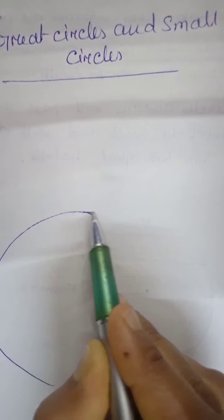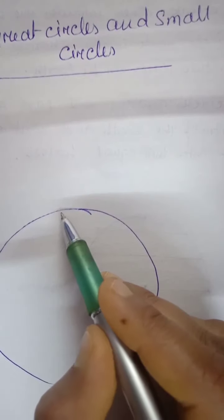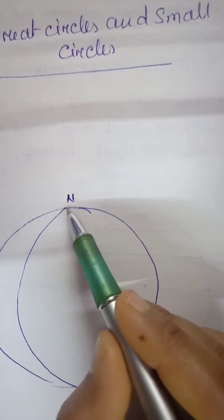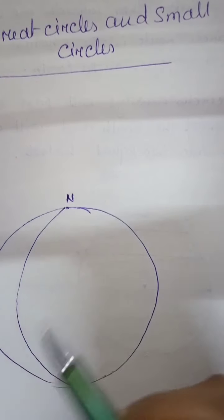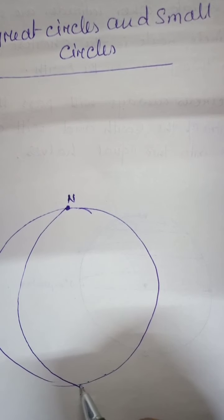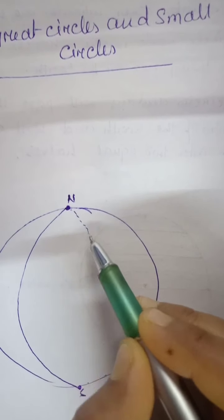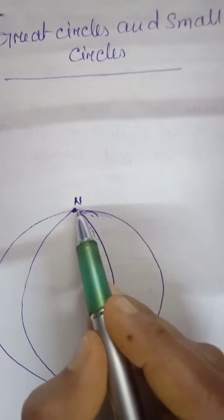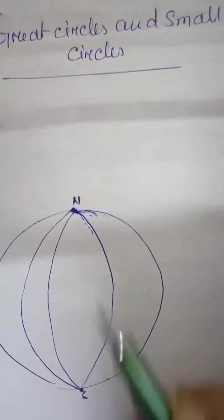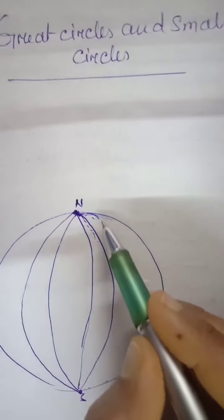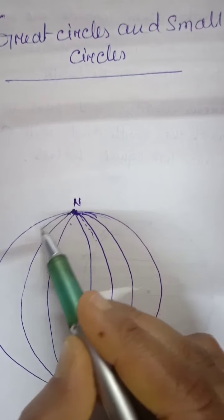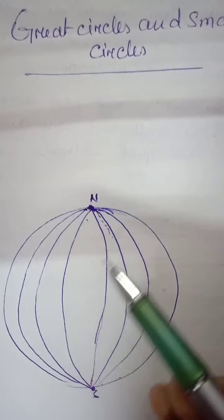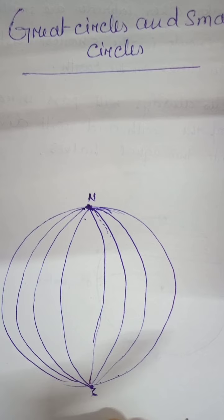Now, why are all meridians great circles? The meridians pass joining the north pole and south pole on one side, but if you look at the back side, they are also completing a full circle and passing through the center of the Earth. All meridians, on one side we see an arc, but on the back side they complete a full circle — so all meridians are great circles.